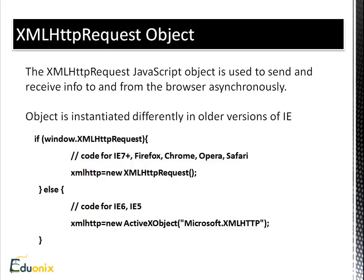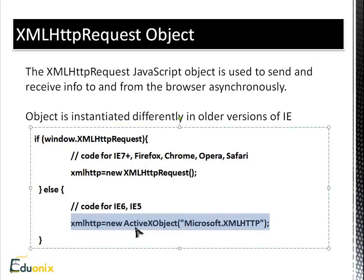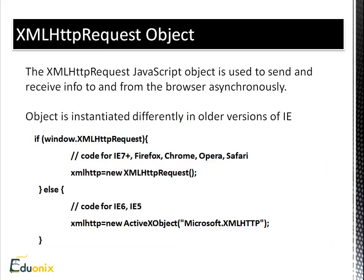The XMLHttpRequest object is a JavaScript object used to send and receive info. The object is instantiated differently in older versions of IE. We say: if window.XMLHttpRequest — this works for IE7 and above and all other browsers. Then we have an else statement, because if this isn't true, that means we're in IE6 or earlier. In that case, we instantiate it using an ActiveX object. We have to include this code in our AJAX script.